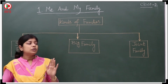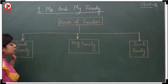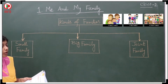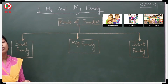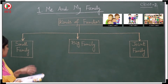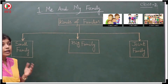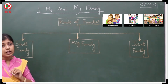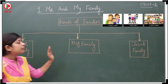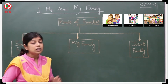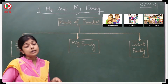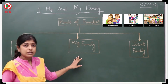The family is divided into three types. One is the small family. Which family should be considered a small family? Small family means the parents along with one or two children. Whenever the parents live along with one or two children, that is called the small family. Next is the big family — big family means the parents reside with more than two children. That family is called a big family.